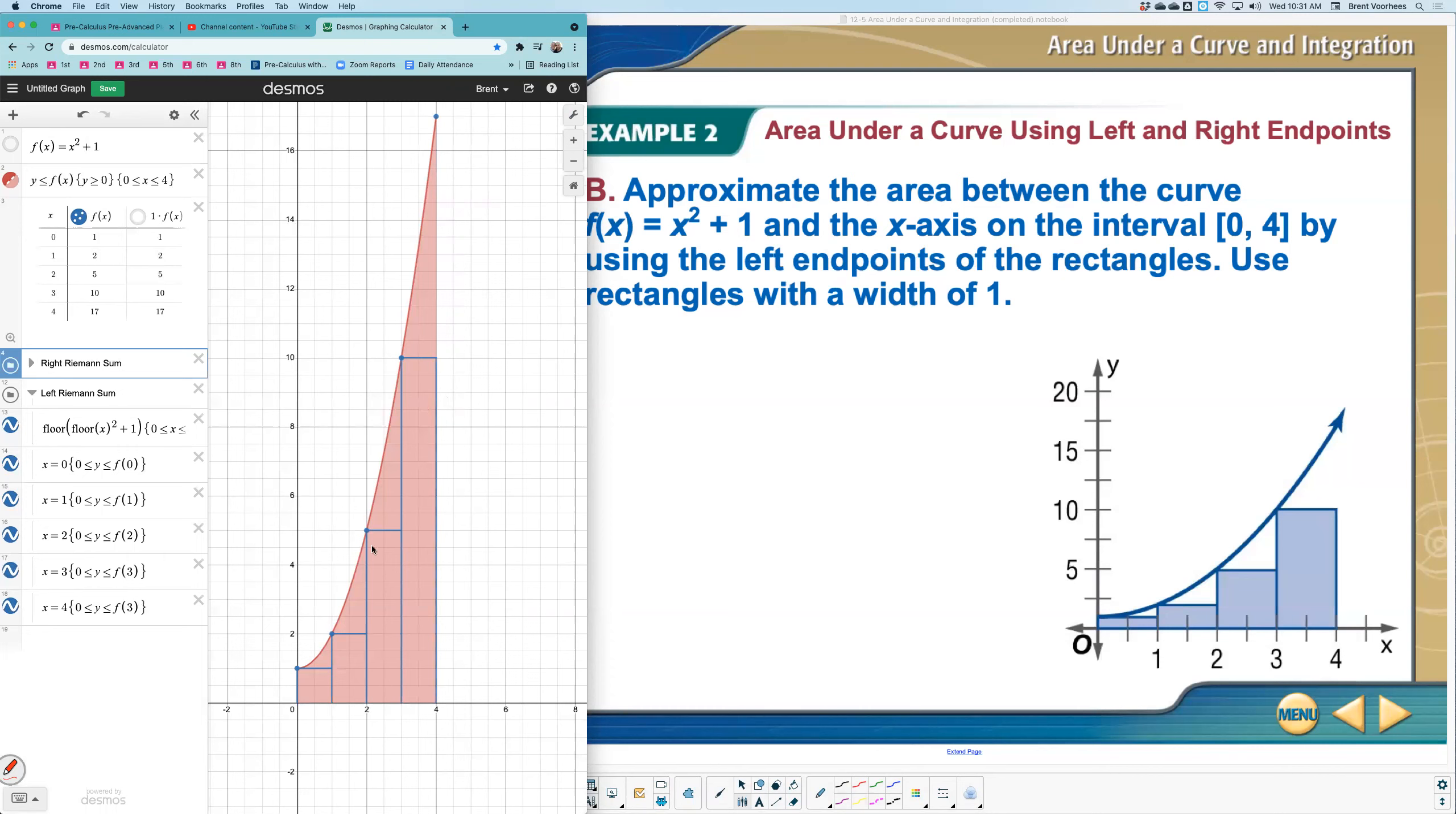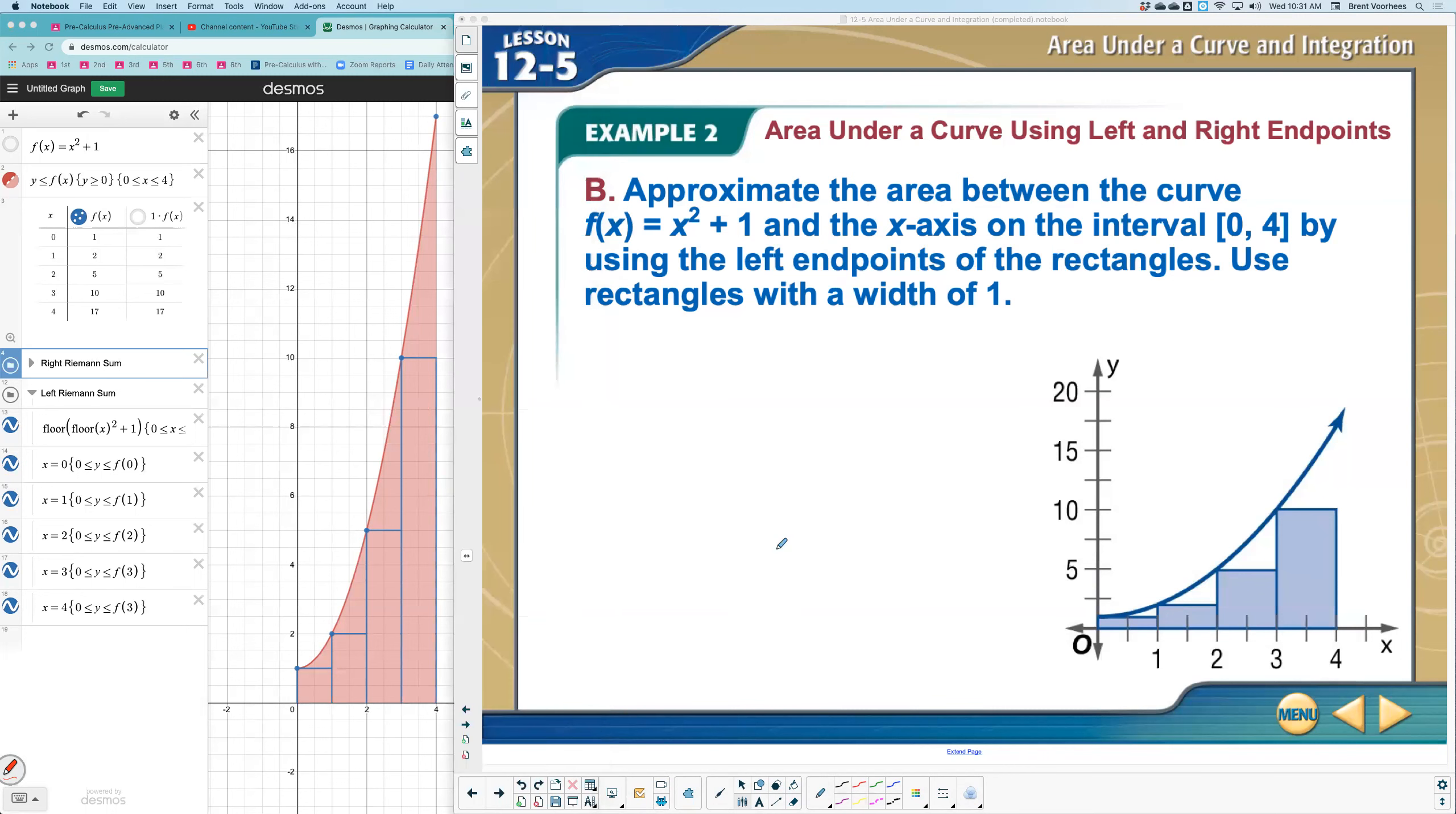So left endpoints would look a little bit different. Let me turn these off. And now let's look at the left endpoint. So now we're finding the area using left endpoints. Notice this is going to be an underestimate of the area. It's not going to include all the area. And so what would happen is again, I would do base times height and we're doing a base width of one, but this time using the left endpoints, I would use the values zero, one, two, three. I'm not going to use the four because that would be on the right side.